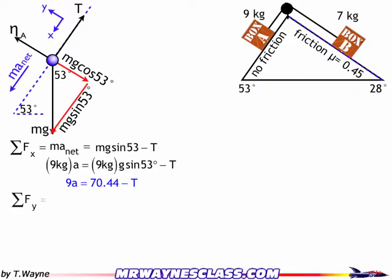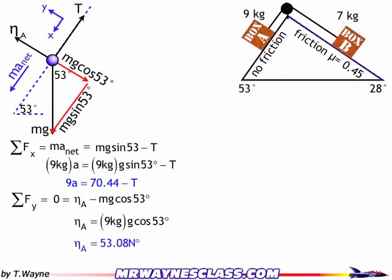Sum of the forces in the y direction — that's perpendicular to ma net, so that equals zero because the box isn't accelerating in that direction. That gives N_A minus mg cosine 53 = 0, which means the normal force N_A equals 9 times g times cosine 53, so N_A equals 53 newtons.